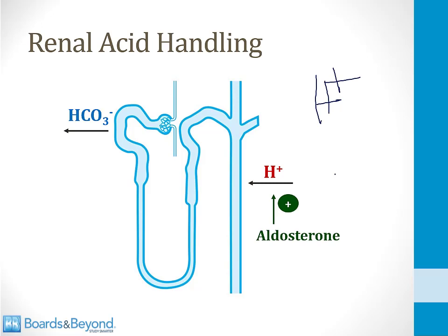So there are three forms of renal tubular acidosis. The first one occurs if bicarbonate reabsorption does not happen in the proximal tubule — that will lead to an acidosis. The second one occurs if hydrogen ions are not pumped into the lumen of the collecting duct — that causes a renal tubular acidosis. And finally, if the nephron cannot respond to aldosterone normally for any reason, that causes the third form of renal tubular acidosis.